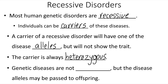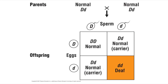Genetic diseases are different than other types of diseases in that genetic diseases are not contagious. They can't be passed from one person to someone else, but the disease alleles may end up being received by the offspring. If the offspring receives the disease allele from both parents, they may end up having that trait.